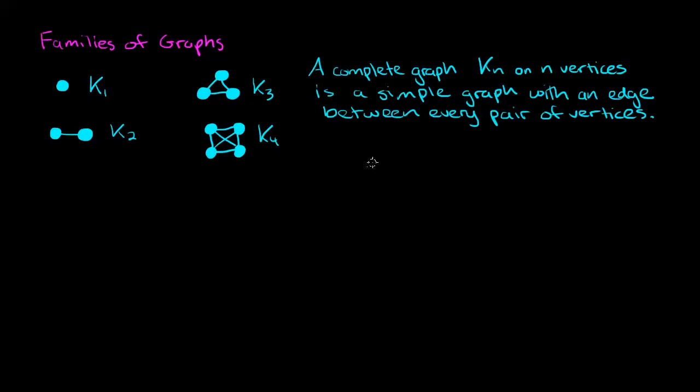Knowing this, let's see if we can draw K5. An interesting point is that the number of edges that the complete graph has, if it has n vertices, then it will have number of edges equal to n choose 2.